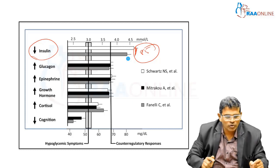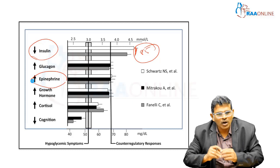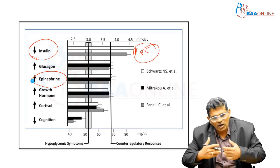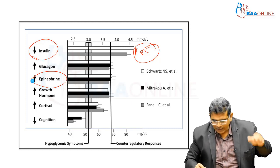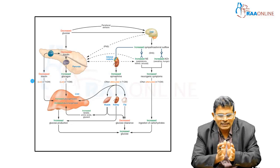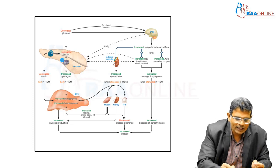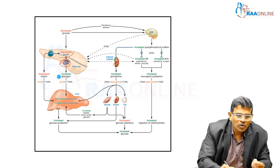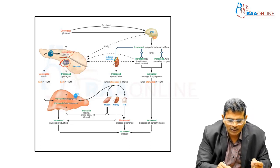The third counter-response to hypoglycemia is an increase in epinephrine. Growth hormone, cortisol, and decrease in cognition all happen at the later part of hypoglycemia. So the first few responses are: decrease in insulin, increase in glucagon, and increase in epinephrine. The decrease in insulin and the compensatory increase in glucagon together signal the liver, causing increased glycogenolysis.